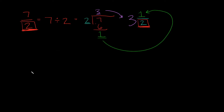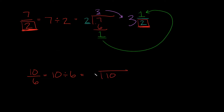Let's try one other example. What if we had 10 over 6? Again, fractions are just division problems. So 10 over 6 is the same thing as saying 10 divided by 6. So 6 goes into 10 one time, and then 1 times 6 is 6.